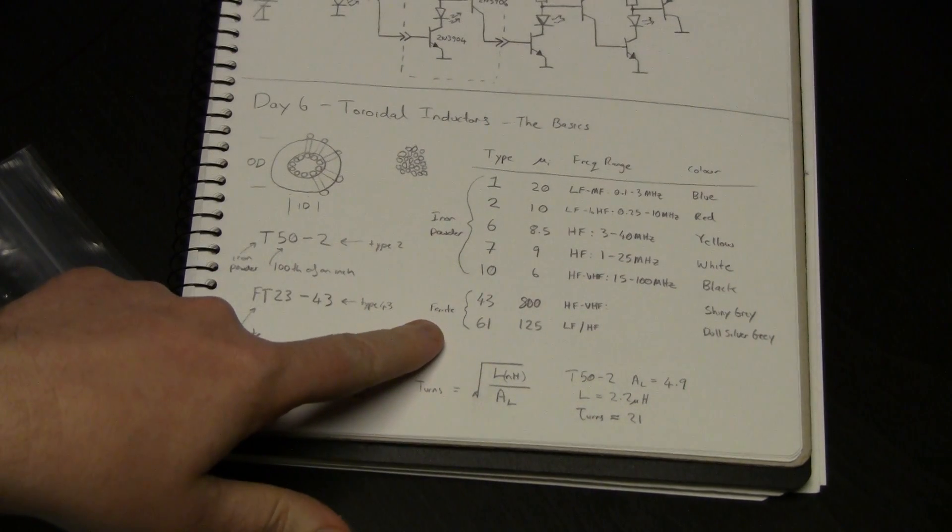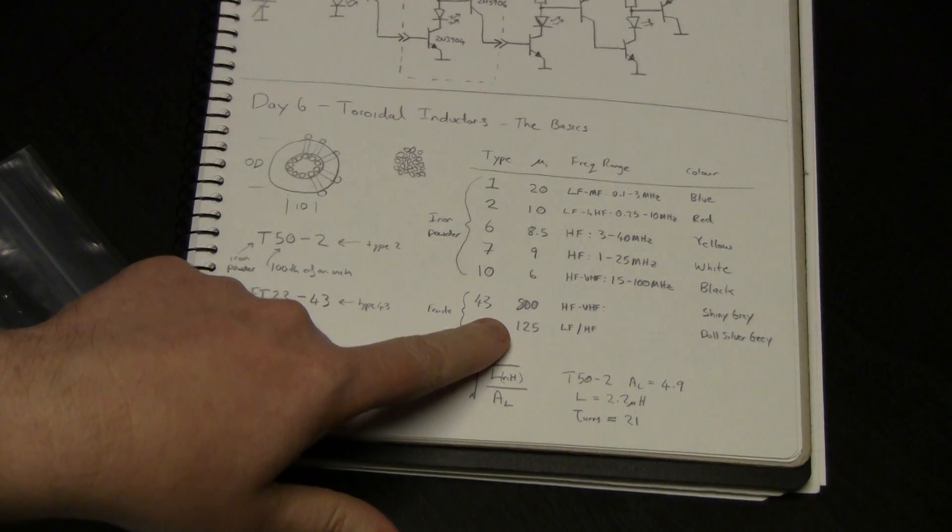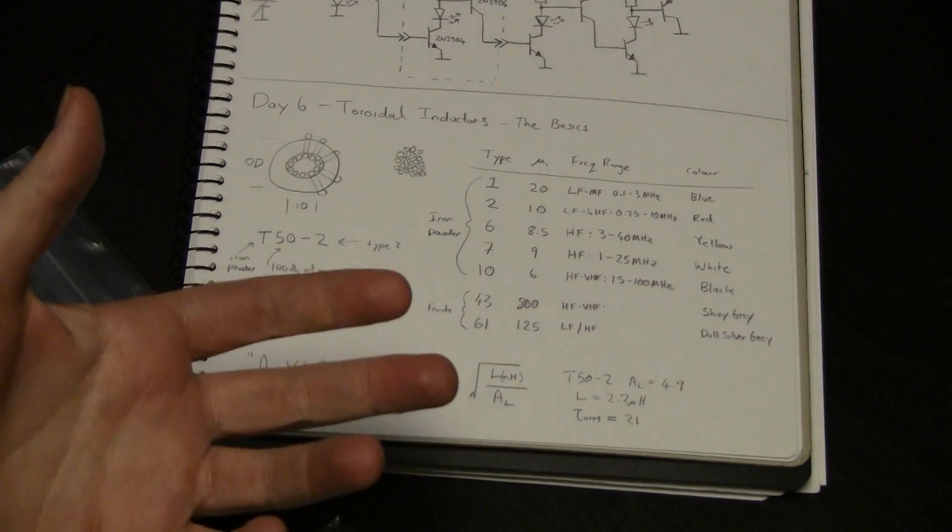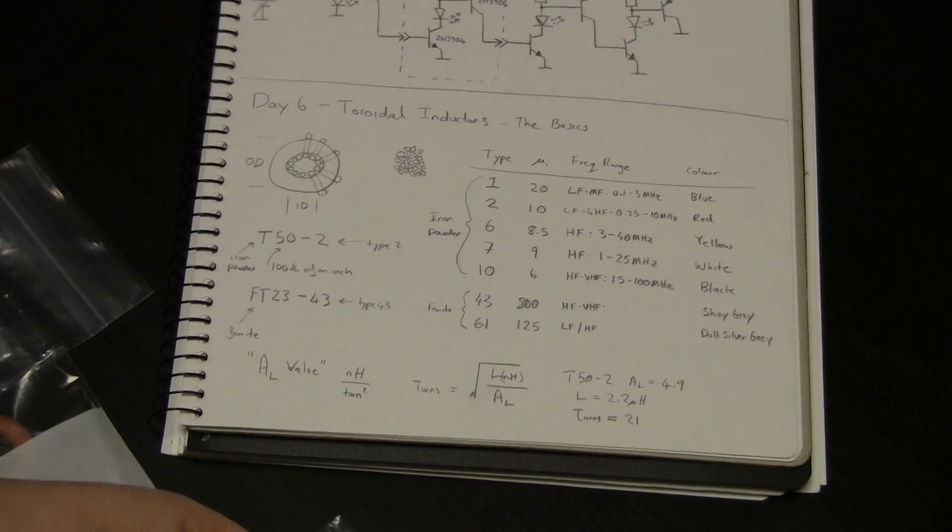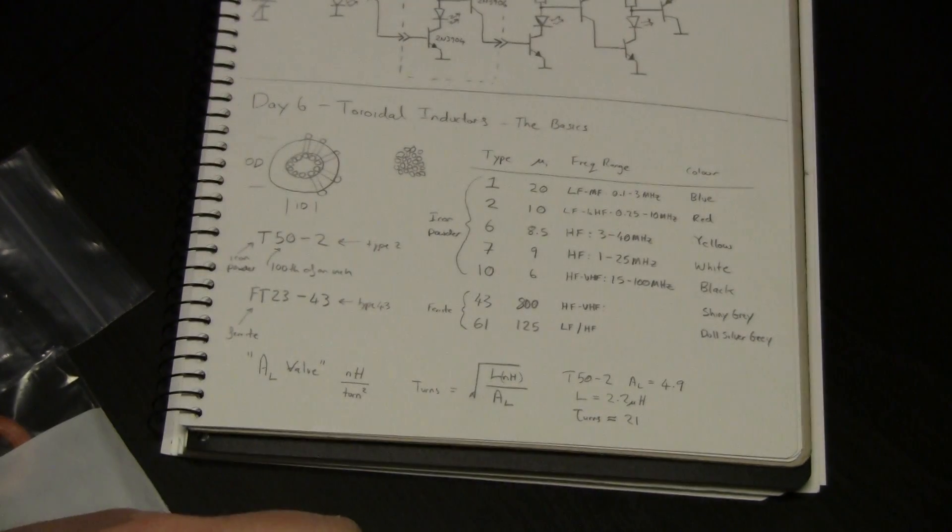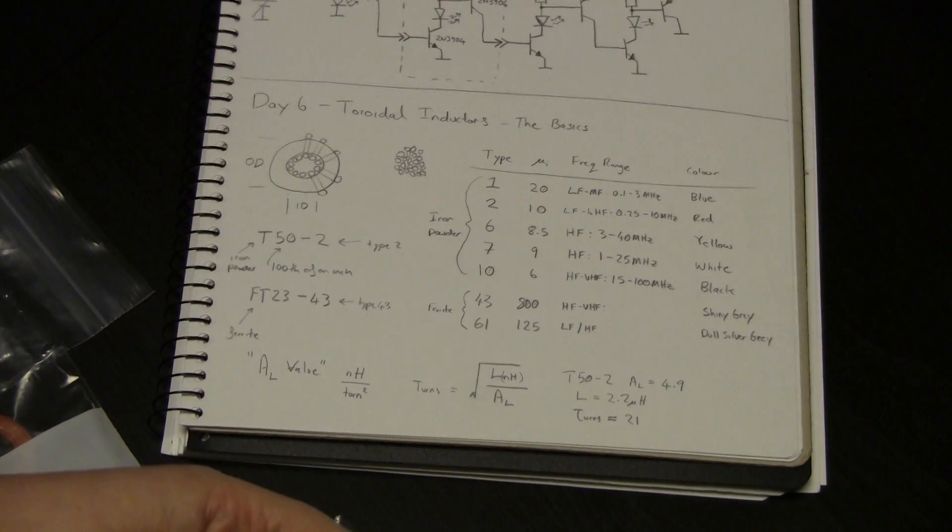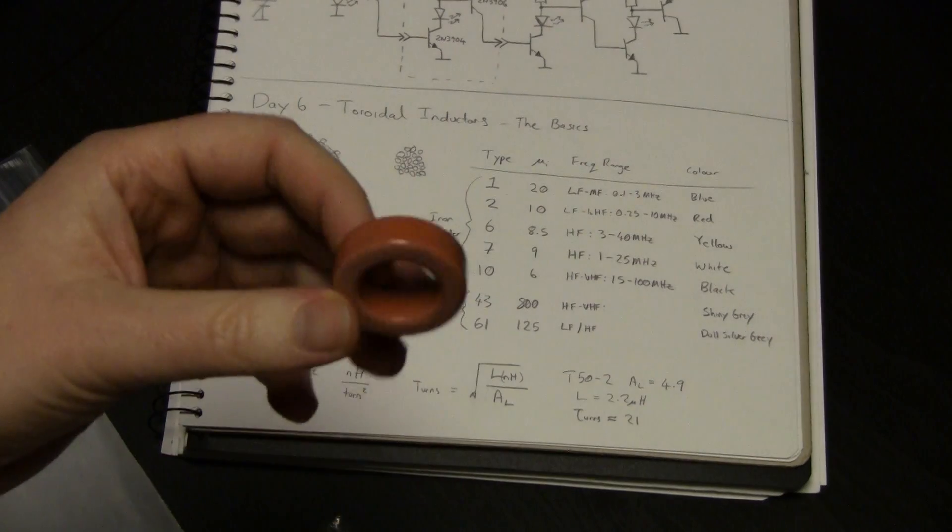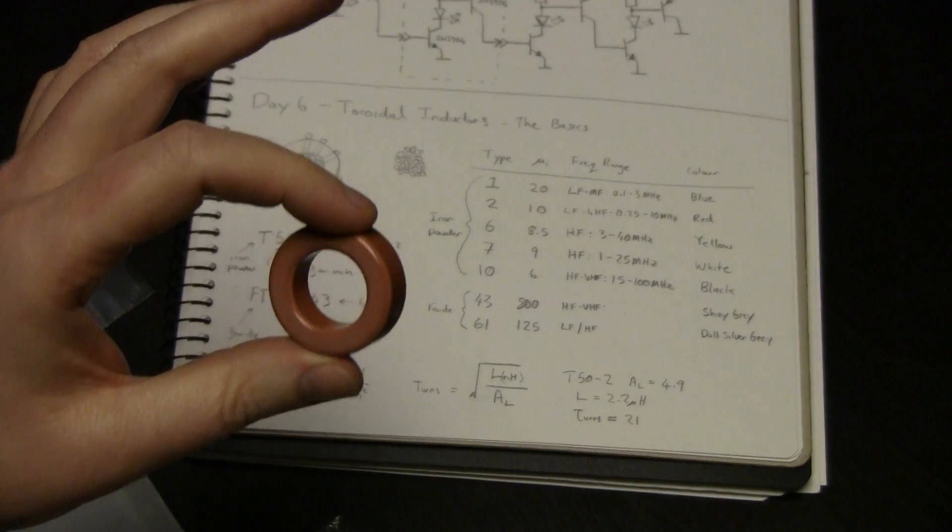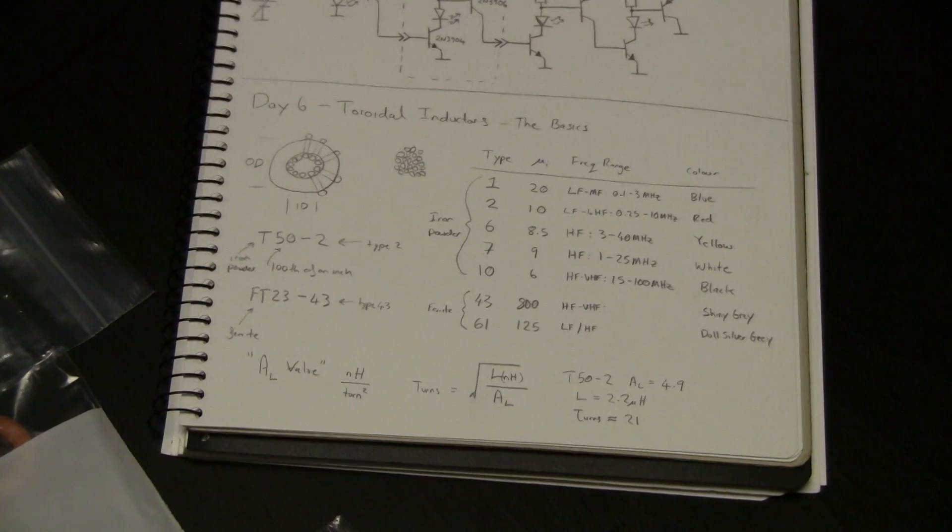Also, ferrites tend to saturate. They have very high permeabilities. You can see their permeabilities in the hundreds, like Type 43 is 800. But it will saturate very quickly, and unless you have a gapped core, which obviously a toroidal inductor is not a gapped core, they're limited to fairly low ampere turns. And we might talk a bit more about how you actually size a core for various loss parameters and power levels later. That would actually be a pretty good topic. I think we might do that later.